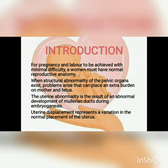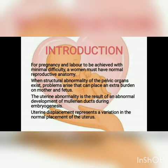At the time of embryogenesis, if the Mullerian duct doesn't grow properly, there is failure in the development, and because of that there will be uterine abnormality — development failure in the uterus, cervix, and the upper one-third of the vagina. Uterine displacement is the variation in the normal placement of the uterus. The normal placement is anteverted, but due to etiologies like fibroids or puerperium, the uterus can become retroverted or inverted.